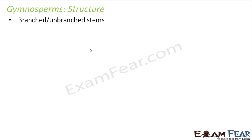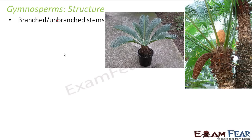Now let us talk about the structure of gymnosperms — their roots, leaves, and stems. Talking about their stems, they can have branched or unbranched stems. An example of a plant with branched stems is pine, and an example with an unbranched stem is cycas. In pine the stems branch out, whereas in cycas the stems are not branched — each one is an individual stem.